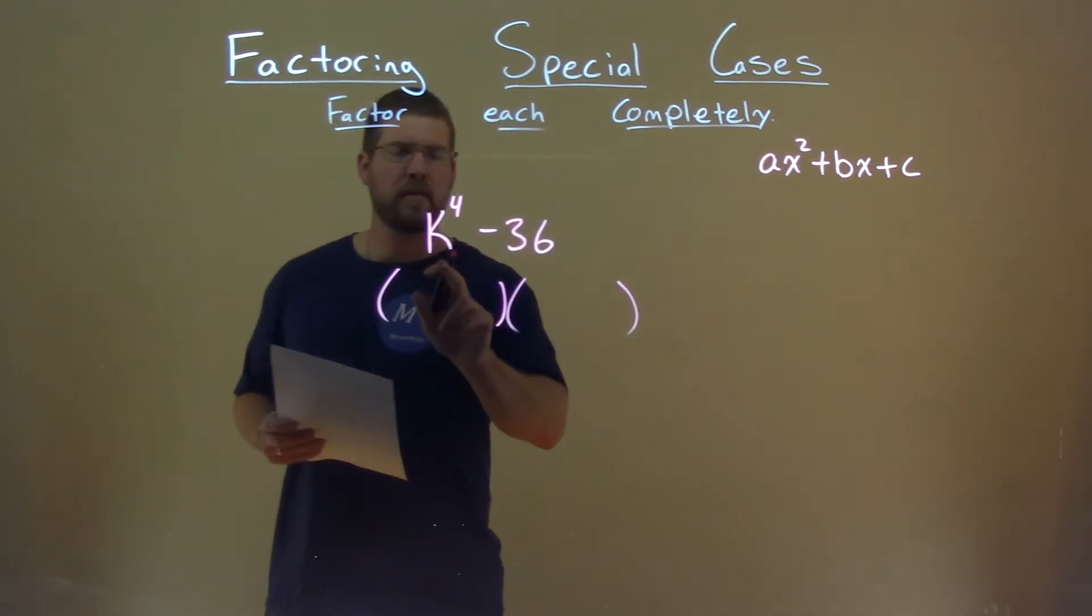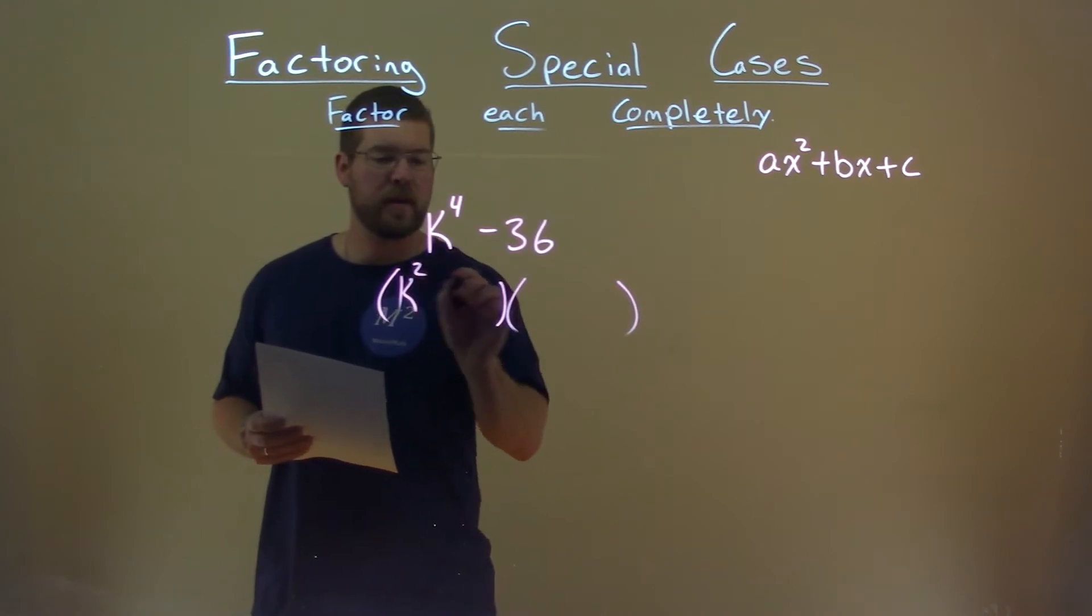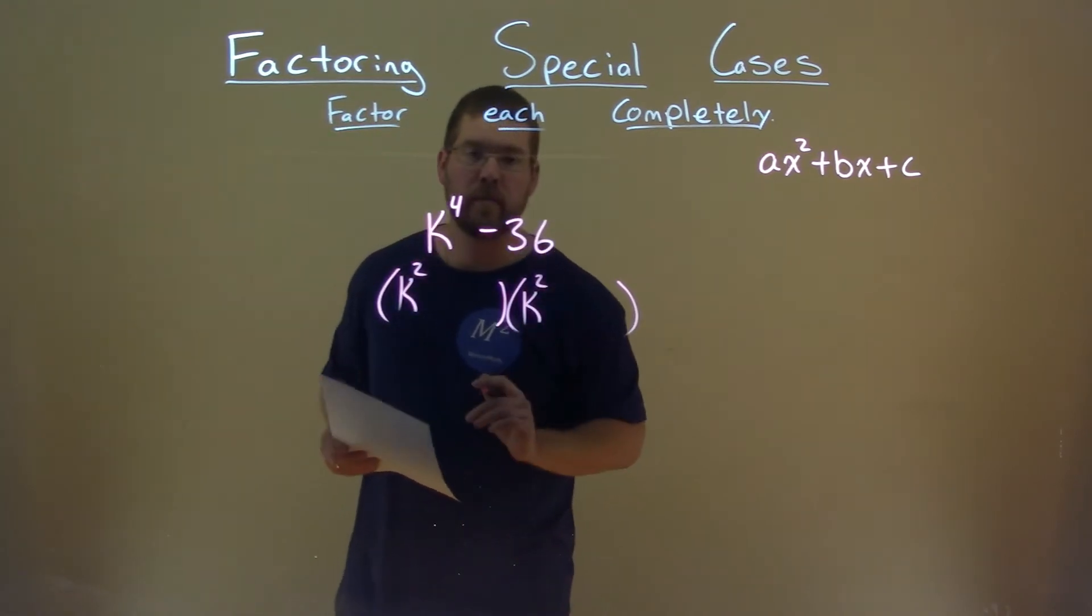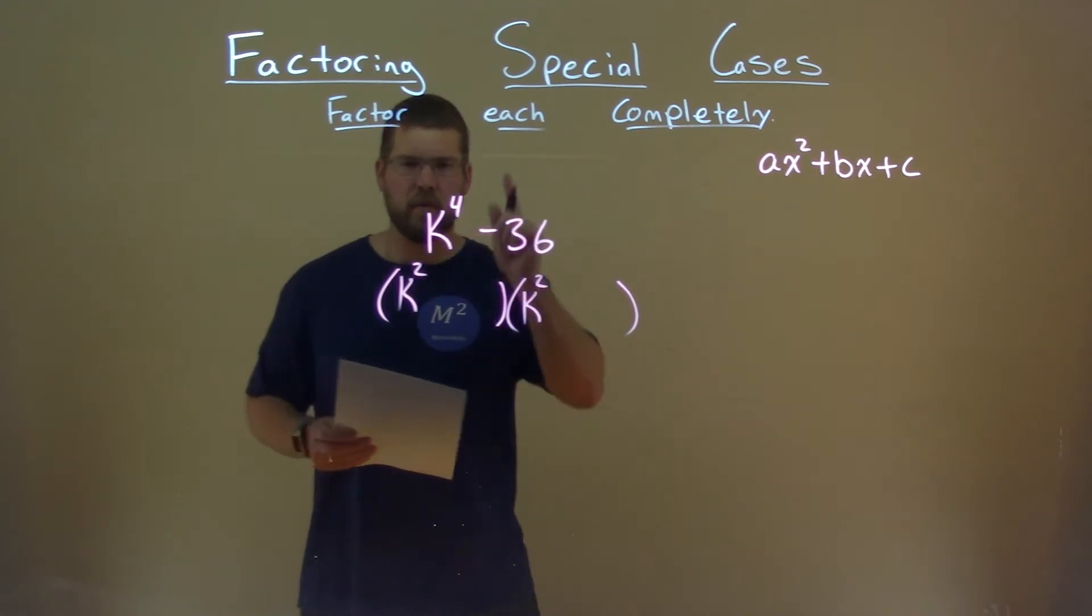So we factor out like this. k to the fourth, square root of that is k squared, k squared. k squared times k squared equals k to the fourth.